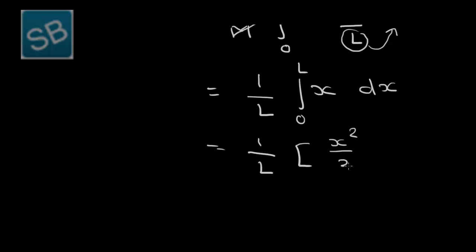But the limit what we have to put is 0 to L. According to the properties of integration, we have to substitute the values—maximum value first of all. So L square by 2 minus 0. Finally you will get 1 upon L into L square by 2.